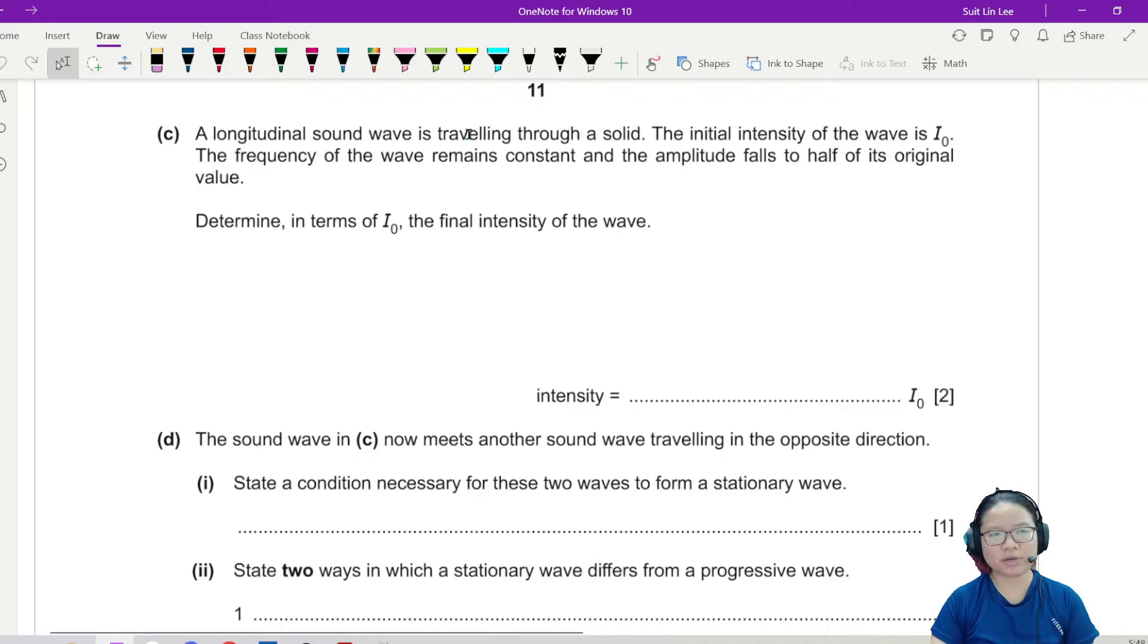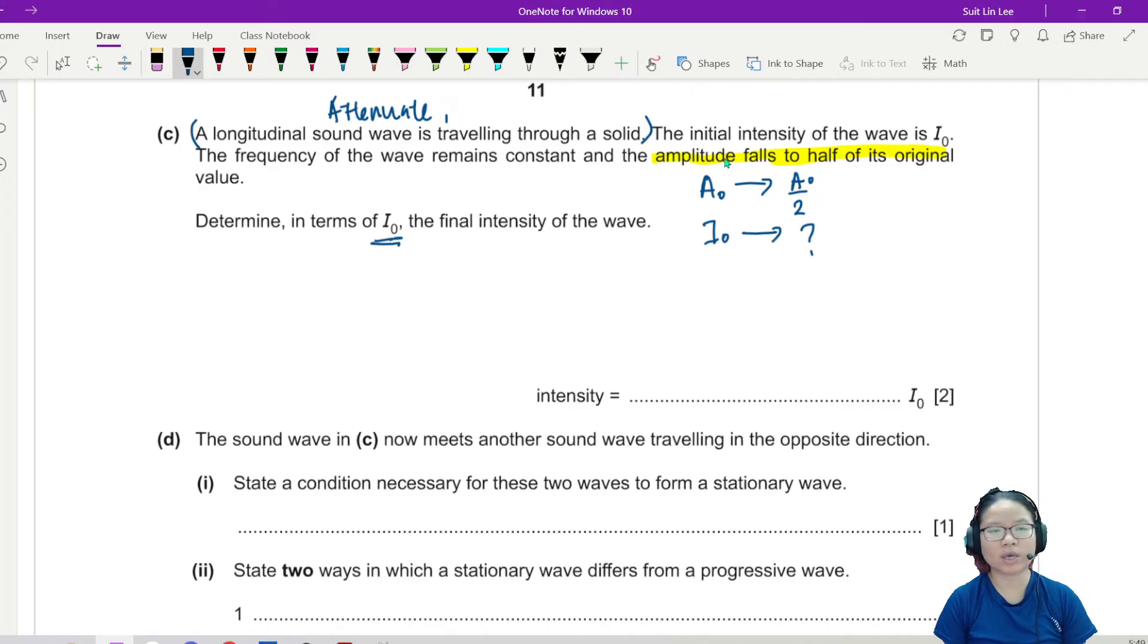Let's look at C. The longitudinal sound wave is traveling through a solid, and the initial intensity of the wave is I-naught. The frequency of the wave remains constant, and the amplitude falls to half of its original value. So from A, we become A over 2. A-naught. Determine in terms of I-naught what is the final intensity of the wave. So I want to know I-naught becomes what? That's the question. So as the sound wave is traveling in the solid, the sound wave will attenuate. You will learn about attenuation in A2, how to calculate that. But this one is fairly okay. When the sound wave travels, if you sit further away from me, I am softer because the amplitude will drop. So the amplitude drops to half.